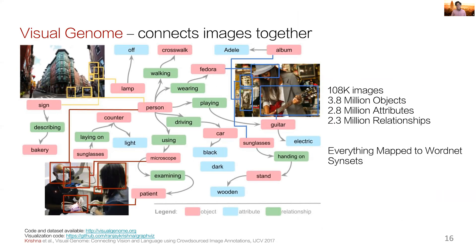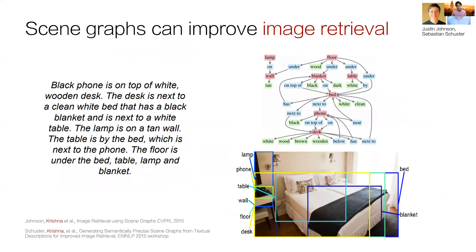Therefore, the scene graph representation involves three components — objects, attributes, and relationships — and brings them to the forefront of encoding visual concepts. In 2017, we released the Visual Genome dataset with 108,000 scene graphs containing millions of objects, attributes, and relationships. We showed that scene graphs provide the scaffold that connects language and vision through a shared compositional representation.